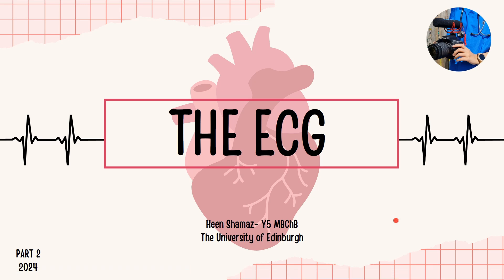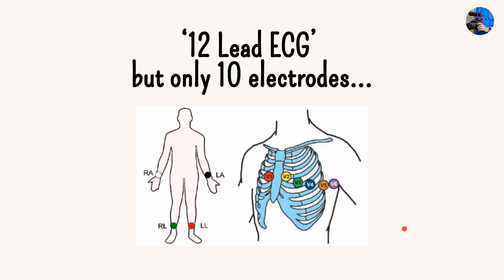We're going to focus all our energy on the ECG now. Hopefully you've watched the first part, which combined the ECG with the cardiac cycle. Today we're moving straight into the ECG, thinking about all these different leads. You probably know this is called a 12-lead ECG, but practically you only have 10 electrodes. People get this mixed up — you need to remember that leads and electrodes are different. A lead is like a circuit, so you're measuring the electrical conductivity of the heart in 12 different circuits but using only 10 electrodes.